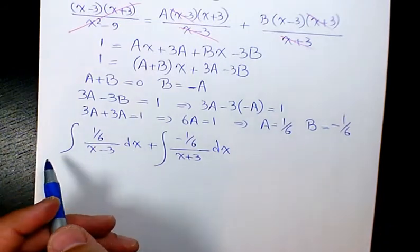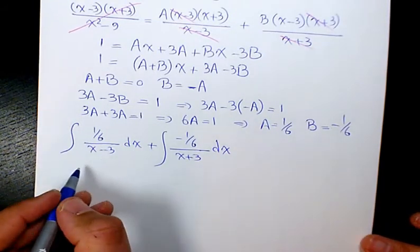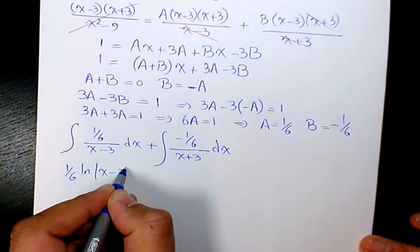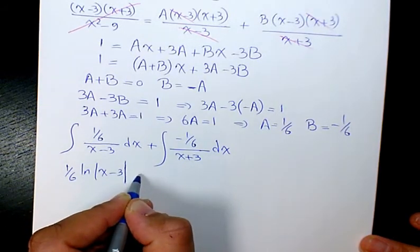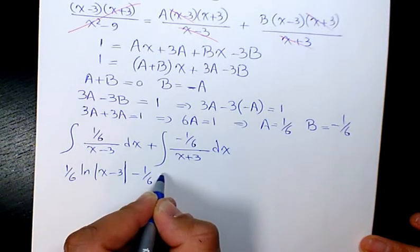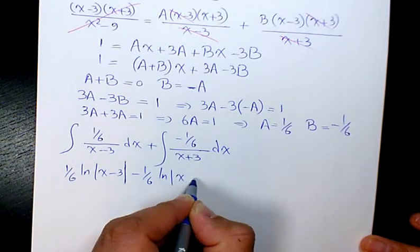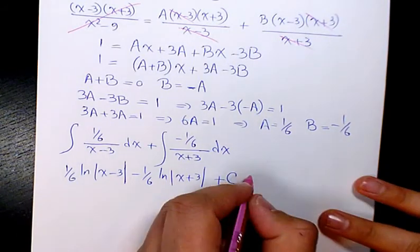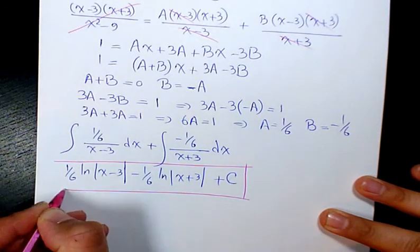Then we need to find the integration. It will be 1 over 6 ln x minus 3 minus 1 over 6 ln x plus 3 plus a constant number. So that will be the final answer.